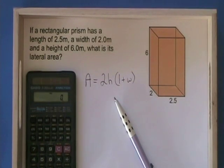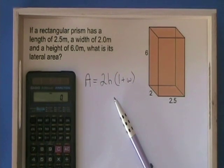To calculate the lateral area of a rectangular prism, we just have to plug in the height, the length, and the width into this formula.